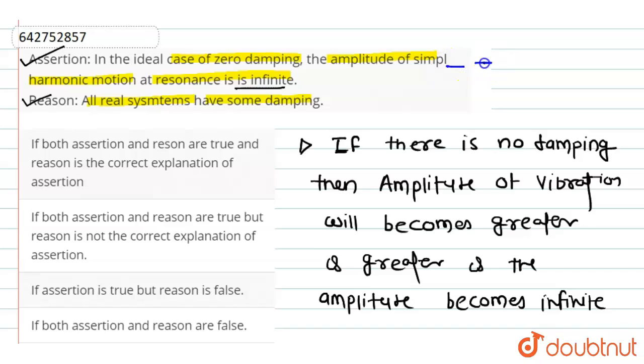It means reason is also true, but here reason is not correct explanation of assertion. Therefore, B option will be the correct option. That is, assertion and reason are true but reason is not correct explanation of assertion.